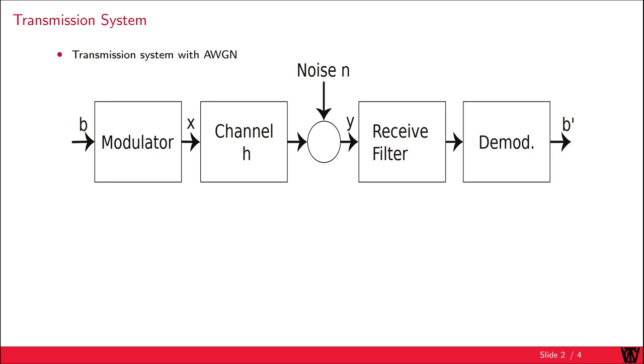As usual, we start with the introduction of our basic transmission system including additive white Gaussian noise. At first, the bits b are mapped onto a transmit symbol x. Then the symbol is transmitted over the channel h, where noise is added. After the transmission over the channel, we get our received symbol y.